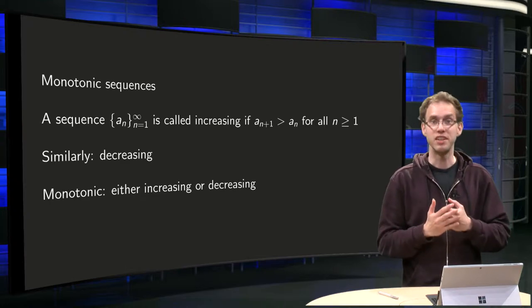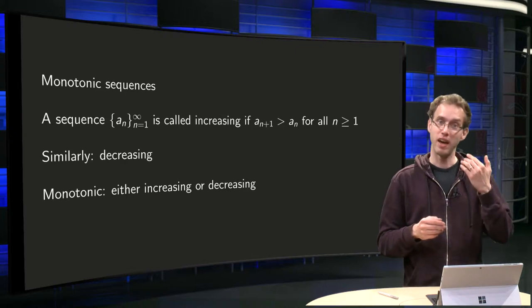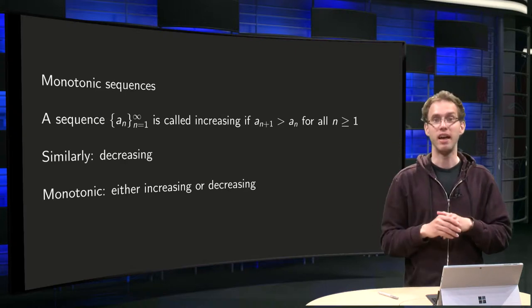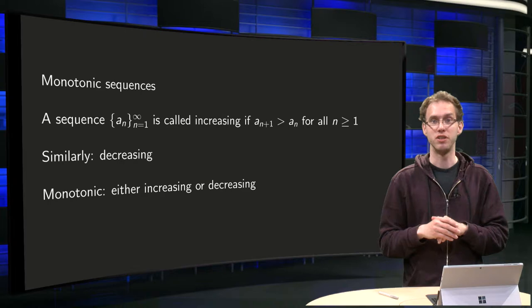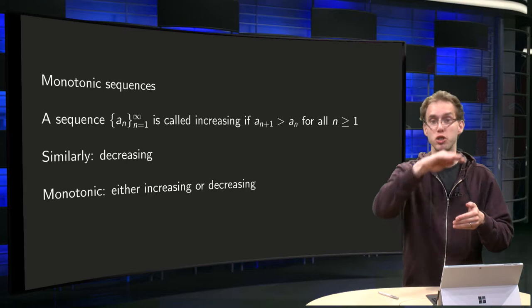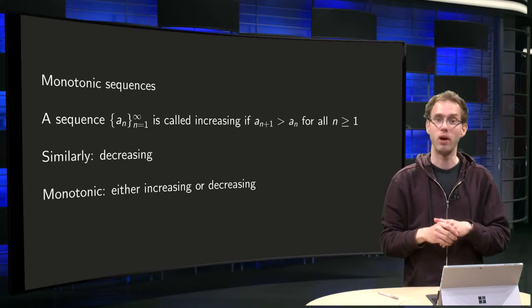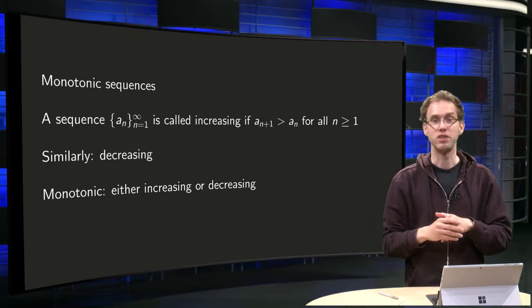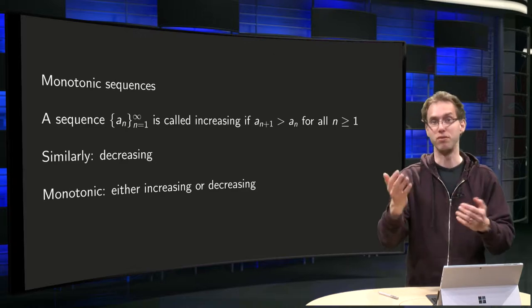A sequence An is called increasing if An+1 is bigger than An for all elements of the sequence, so the sequence is growing. The sequence is decreasing if An+1 is smaller than An for all n, so the sequence is getting smaller. And the sequence is called monotonic if it's either of the two.